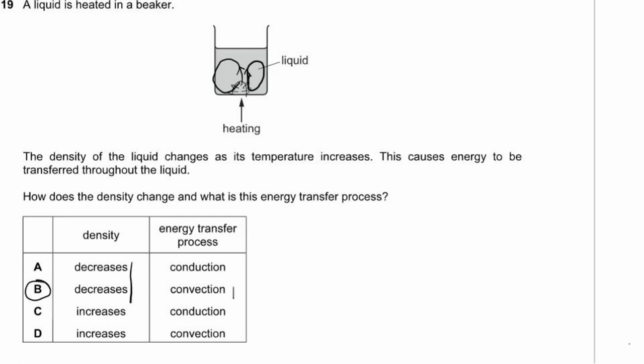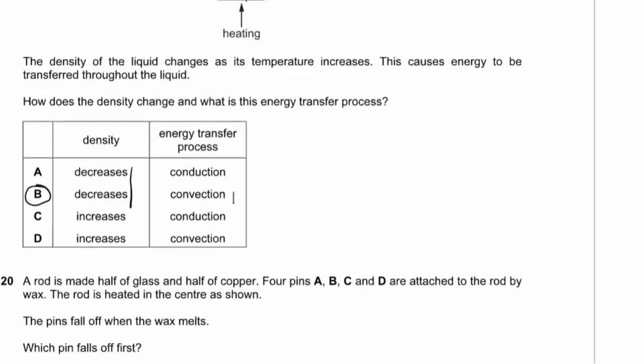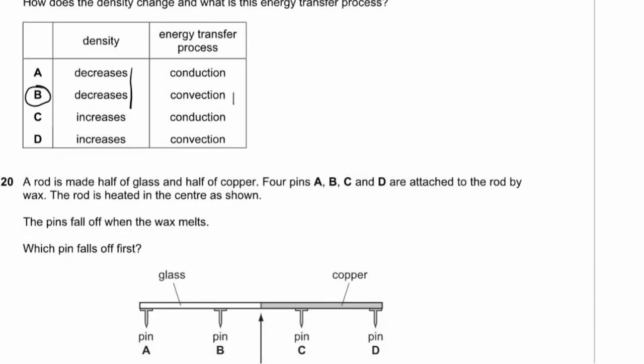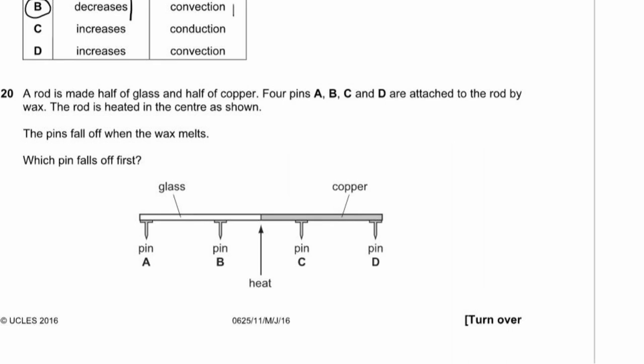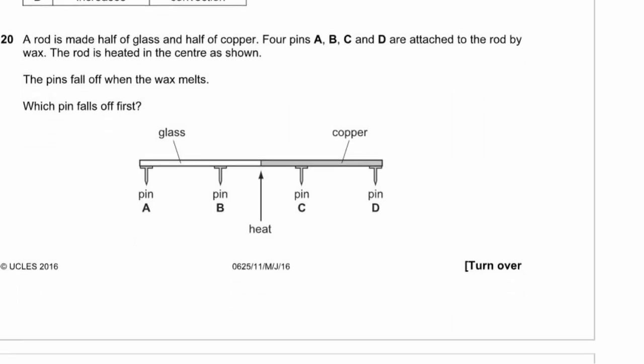That's generally how radiators work: air warms up near them, travels across the ceiling, and back down the other side as it cools. That's why they're quite effective ways to heat a house.